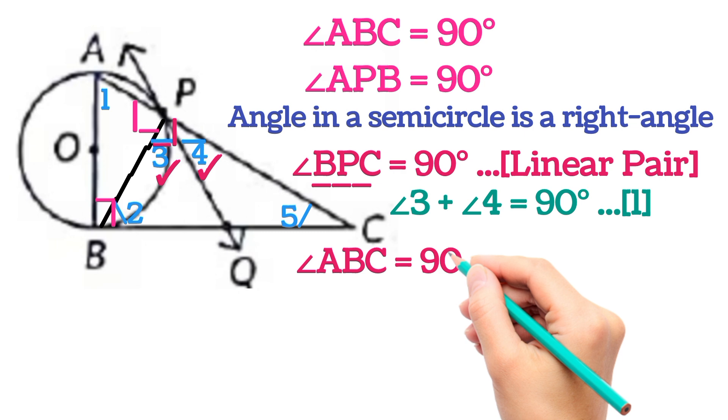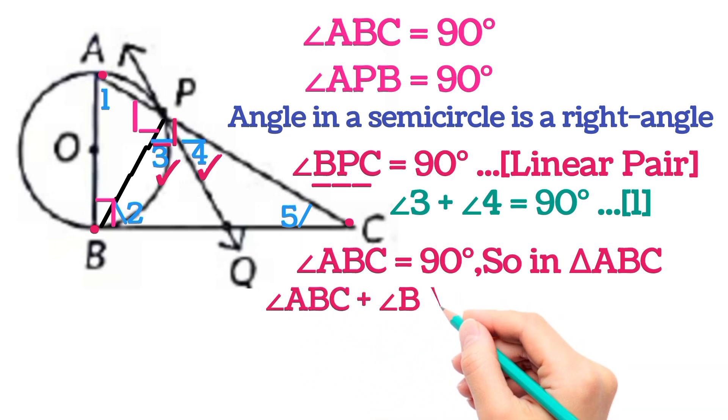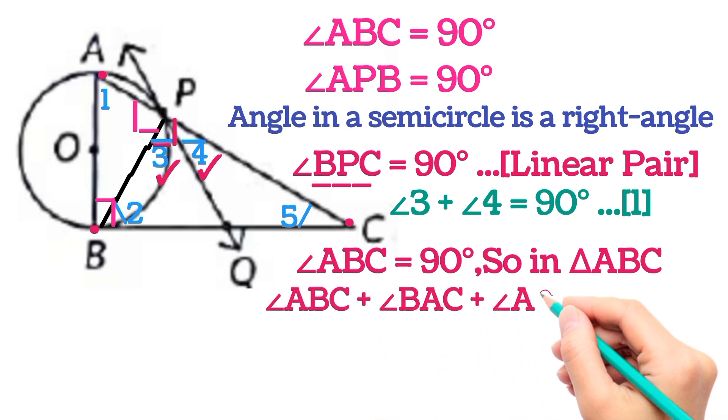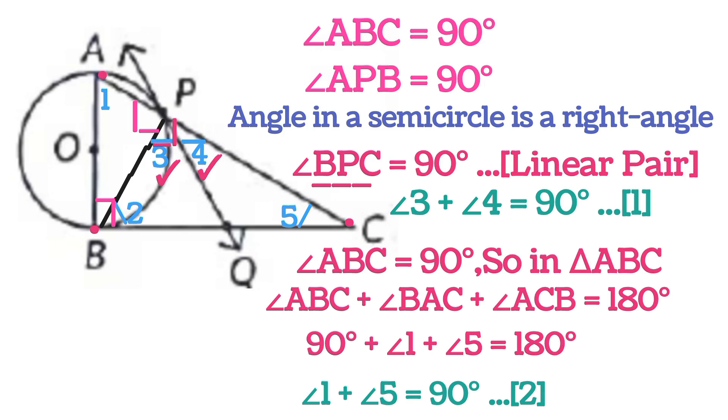Now angle ABC is given 90 degrees. So in triangle ABC we can write angle ABC plus angle BAC plus angle ACB is equal to 180 degrees by angle sum property. On substituting the values we will get 90 plus angle 1 plus angle 5 is equal to 90 degrees. Let us assume this is equation number 2.